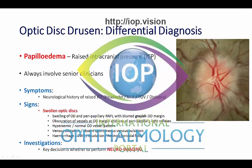The principal differential diagnosis of Optic Disc Drusen as a swollen disc is papilledema — swollen discs in association with raised intracranial pressure. It can be very difficult indeed to tell the difference between some types of Optic Disc Drusen and early papilledema, so my PEARL is: always, always involve senior clinicians and, if necessary, more than one.